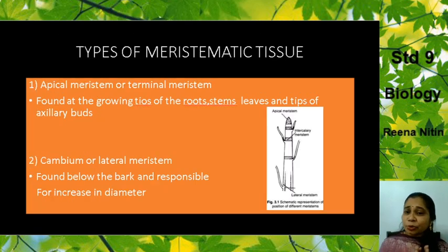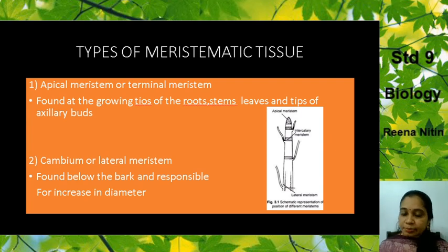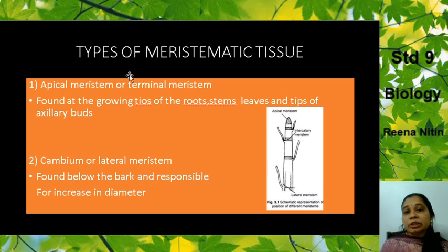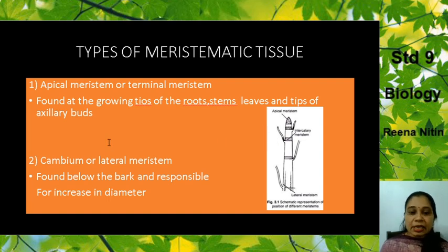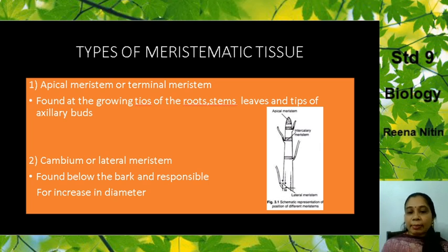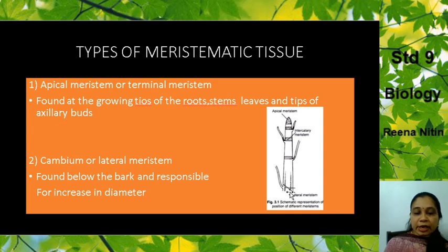Now the types of meristematic tissues. Apical meristem, or the terminal meristem — found at the growing tips of the roots, stems, leaves, and the tips of the axillary buds. Then you have the cambium or the lateral meristem, found below the bark and responsible for increase in the diameter of the stem.